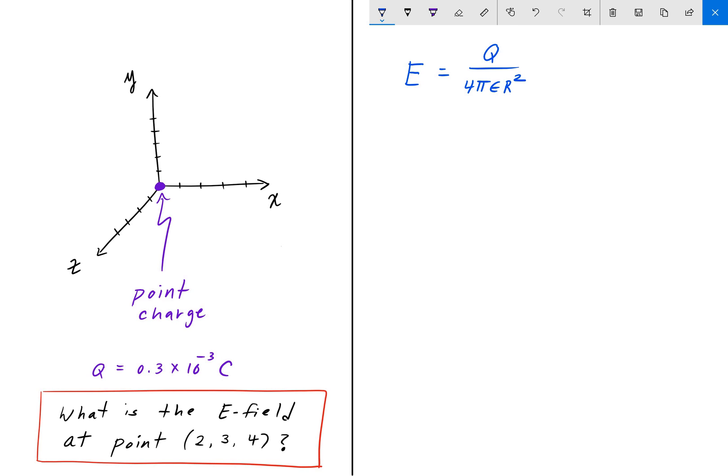Where epsilon is just epsilon 0, which is 8.85 times 10 to the negative 12 farads per meter.